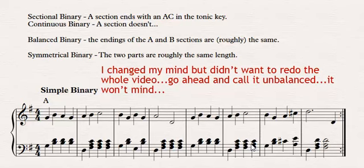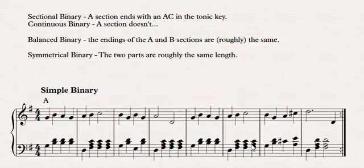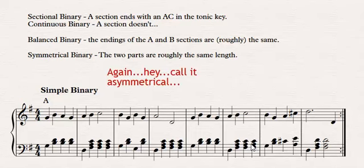And then same with symmetrical. Symmetrical binary, if the A section is roughly the same length within a measure or two of the B section, then it's symmetrical. If it's not, then we're just going to leave it. We're not going to say it's an asymmetrical binary.